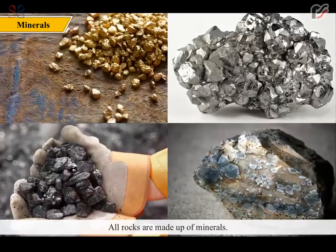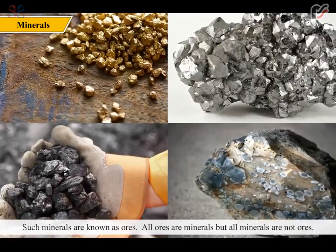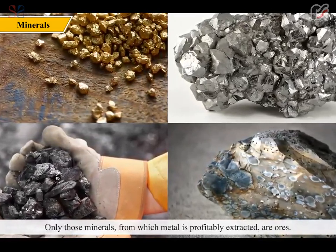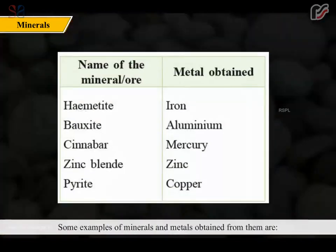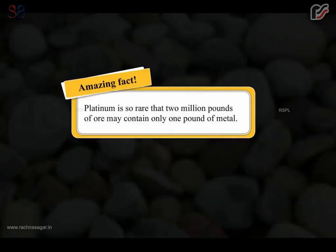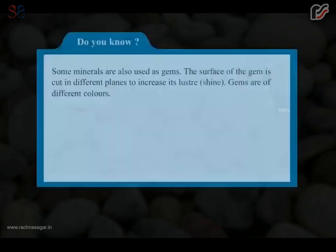All rocks are made up of minerals. Some minerals have rich quantities of metallic and non-metallic substances which can be extracted profitably. Such minerals are known as ores. All ores are minerals, but all minerals are not ores — only those minerals from which metal is profitably extracted are ores. Examples include: Hematite (Iron), Bauxite (Aluminium), Cinnabar (Mercury), Zinc blende (Zinc), and Pyrite (Copper). An amazing fact: platinum is so rare that 2 million pounds of ore may contain only 1 pound of metal.